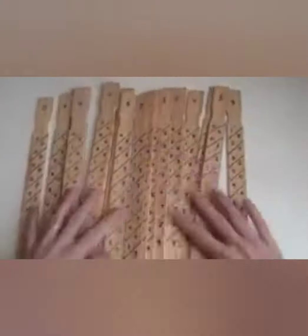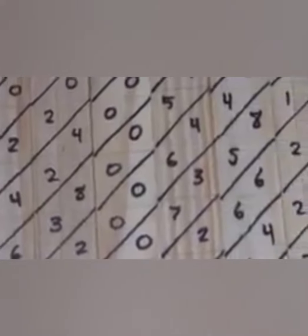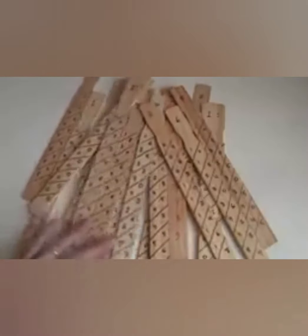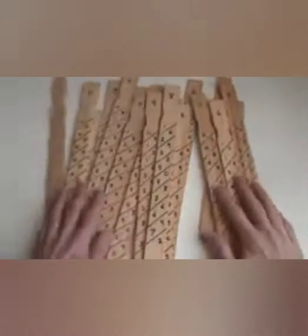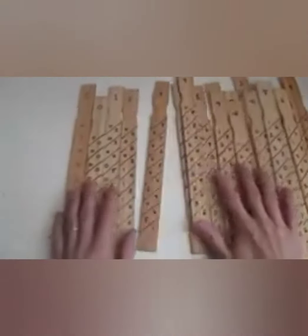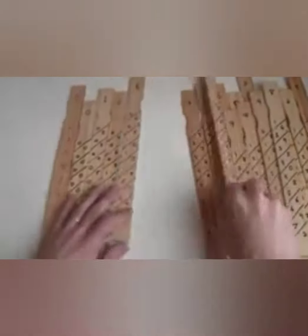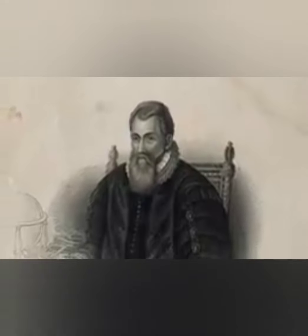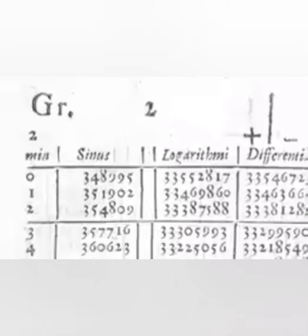The second device is Napier's Bone, also called Napier's Rod. About 400 years ago, John Napier, a Scottish mathematician, invented a calculating device made of a set of rods carved from bones — hence it was called Napier's Bone. It was meant for simple arithmetic calculations such as addition, subtraction, multiplication, and division of numbers.